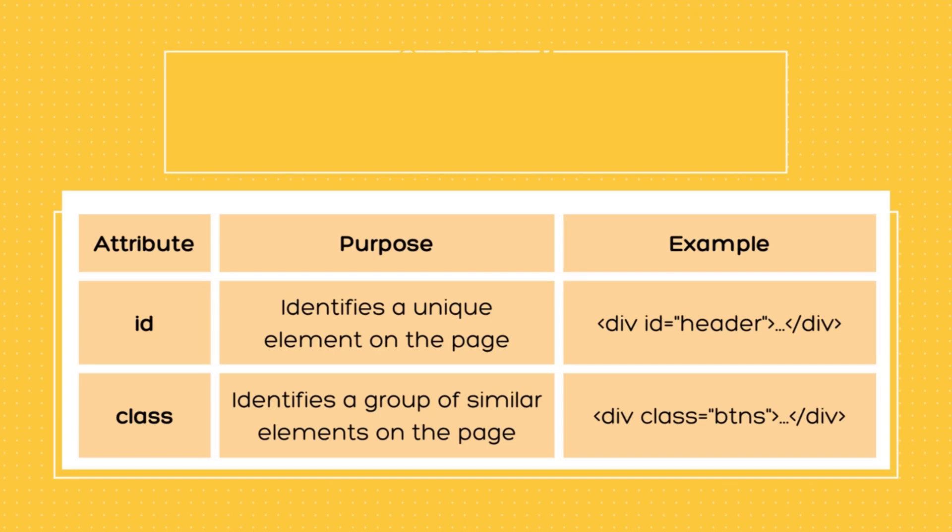On the other hand, the class attribute is used to identify a group of elements that share similar characteristics such as styling or behavior. It can be assigned to multiple elements on a page, allowing developers to apply styles or functionality to multiple elements at once.